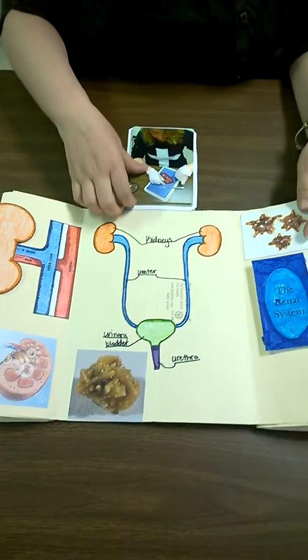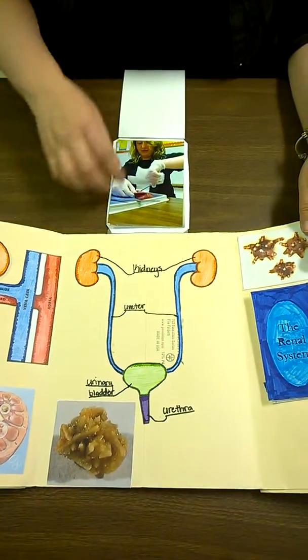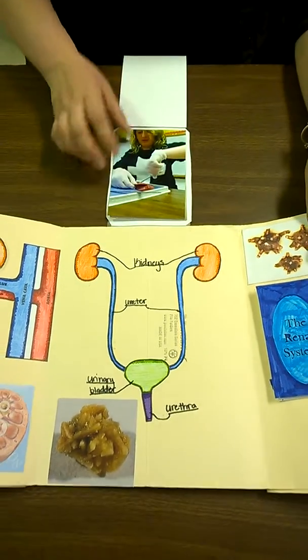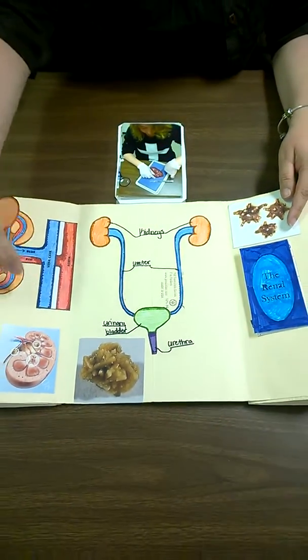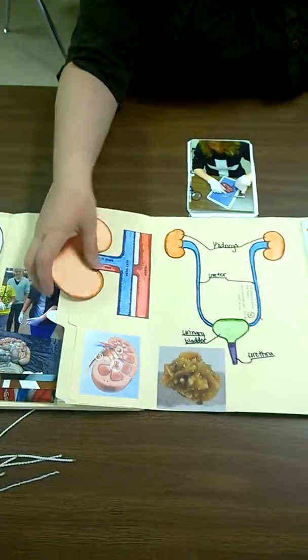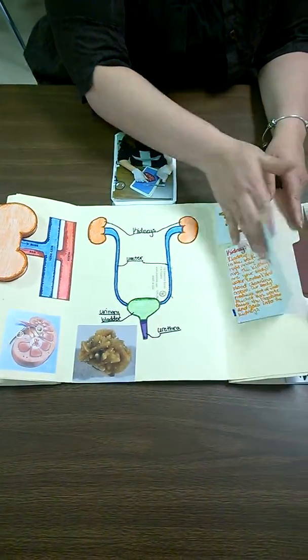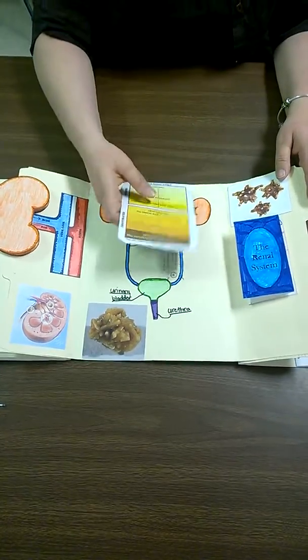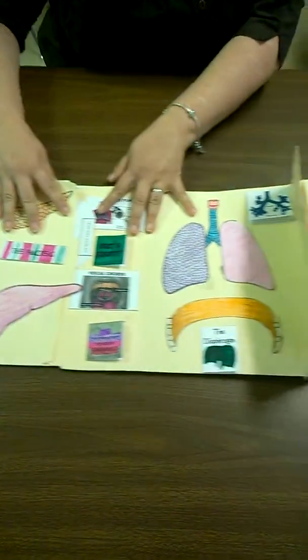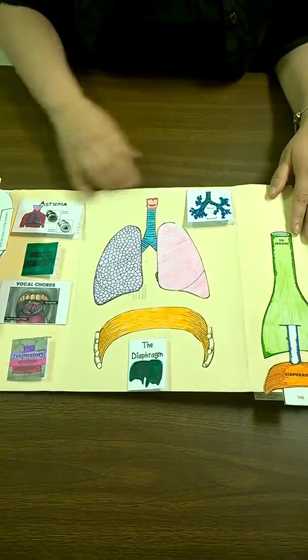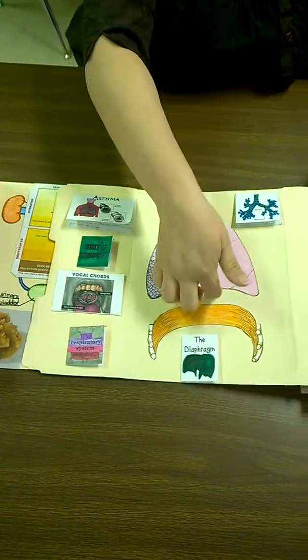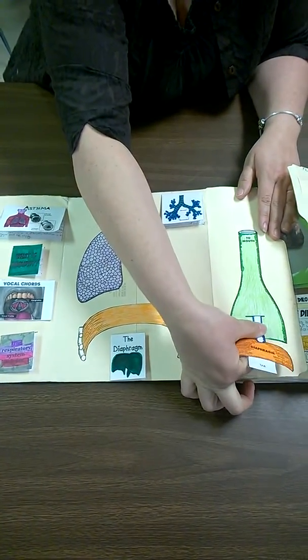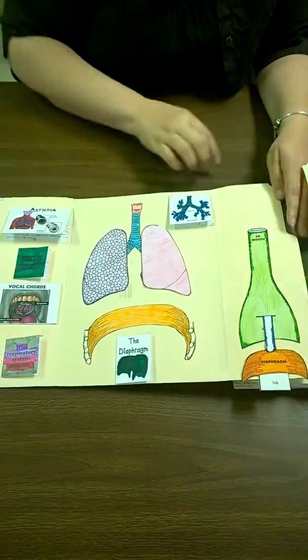This deals with the kidneys and the bladder. Plenty of paper models to go with everything. The next part is the respiratory system with paper models. This used to go up and down, but it looks like it's gotten a little weak.